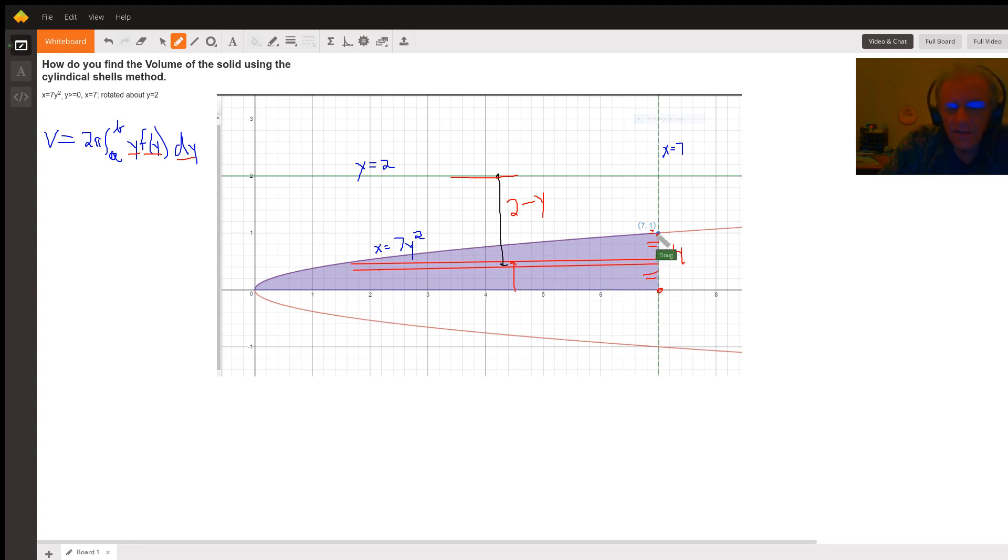Now the height of the shell is the distance from here to here. How can we express that distance? Well, think of right minus left to represent the distance. So it's going to be 7, take away what? Well, for any y value from 0 to 1, this distance is f of y. In other words, that distance is a function of y, and this distance right here is 7y squared according to the definition of the function. So to get the height of the shell, it's 7 take away this distance, 7 minus 7y squared.